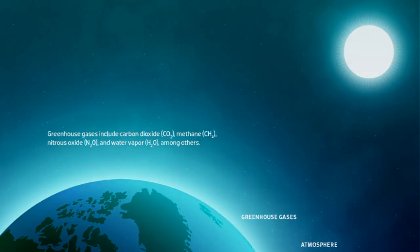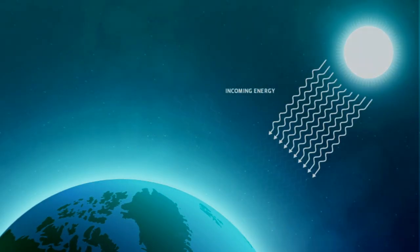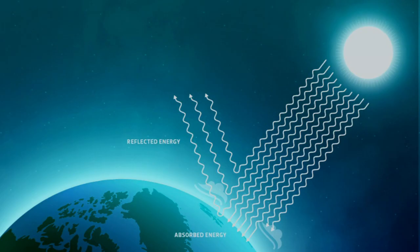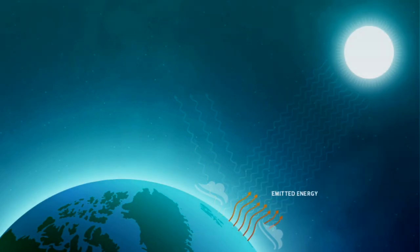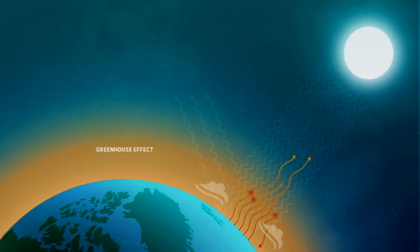Here's how the greenhouse effect works. As the Sun's energy hits Earth, some of it is reflected back to space, but most of it is absorbed by land and oceans. This absorbed energy is then radiated upward from the surface of Earth in the form of heat.